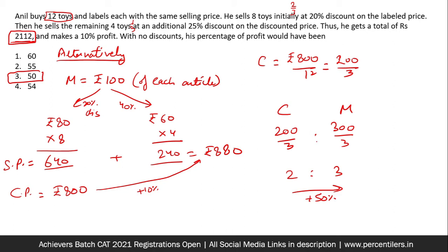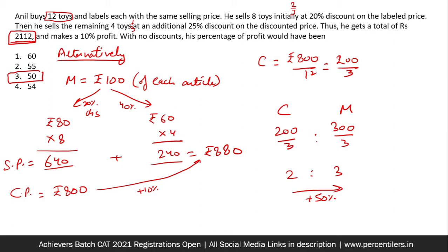Moving on to the last question of the video for simple interest and compound interest. So again, I would do this by two methods. First method, the algebraic method. I do not know the principal amount, that would be P.